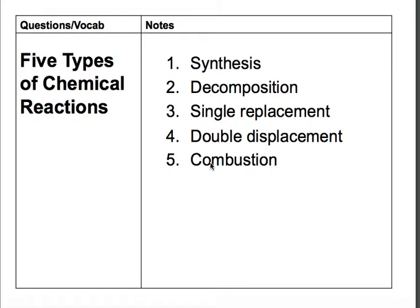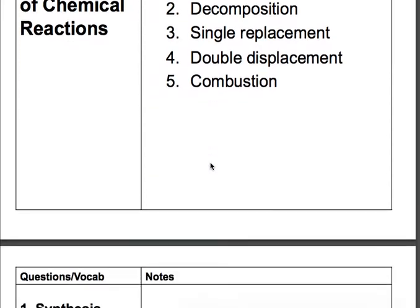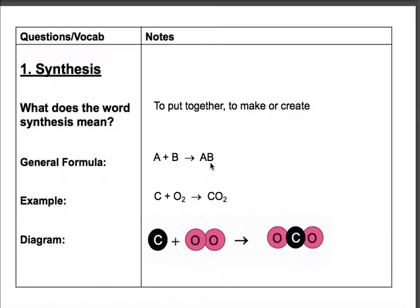The first type is synthesis, the second is decomposition, the third is single replacement, the fourth is double displacement, and the fifth is combustion. So let's start with the first type of reaction, synthesis. So what does the word synthesis actually mean? The word synthesis means to put together, to make, or to create. So when we think about a synthesis reaction, we should think about multiple things coming together to create a single product.